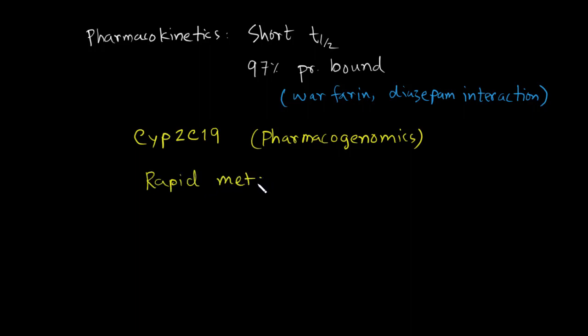The first one is called rapid metabolizers or RM. The second one is intermediate metabolizer or IM. The third one is poor metabolizers or PM.